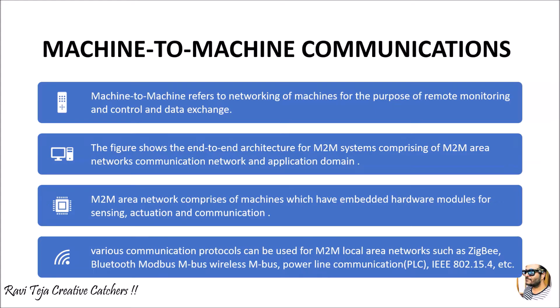Basically, machine to machine refers to networking of machines — that means communication between particular machines for the purpose of remote monitoring and controlling, and also for data exchange. In order to remotely monitor, and if necessary control particular actuators, data exchange can also be done — reading of the data, writing of the data — within the machines, systems, PCs, or servers.